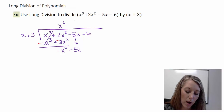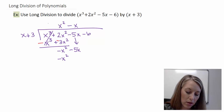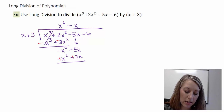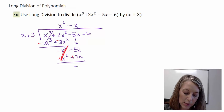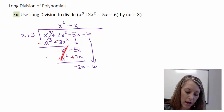X times what gives me negative x squared? That's negative x. So I multiply all of this times negative x: that gives me negative x squared, and 3 times negative x gives me negative 3x. Switch my signs — which is equivalent to subtracting — and combine my terms. Those cancel out, giving me negative 2x. Bring down my next digit and start over.